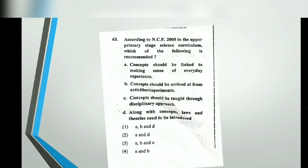The next correct point is that concepts should be taught through activities. If you have seen 6th, 7th, or 8th grade science books, you will have seen many experiments and activities — that is correct. The disciplinary approach option is wrong — that means studying only physics in isolation without connecting to other things. We study science as a whole, in an integrated way. The last option, that laws and theories need to be introduced alongside concepts, is correct — that applies to 9th and 10th grade.